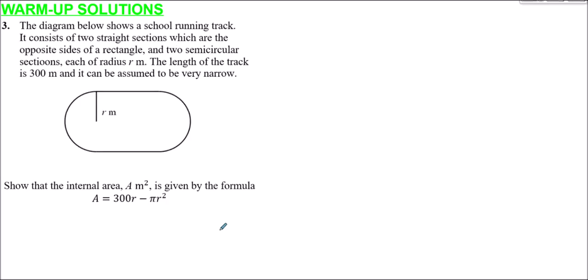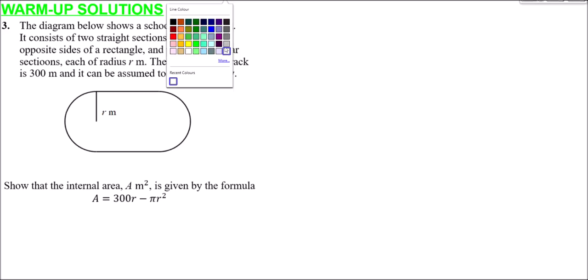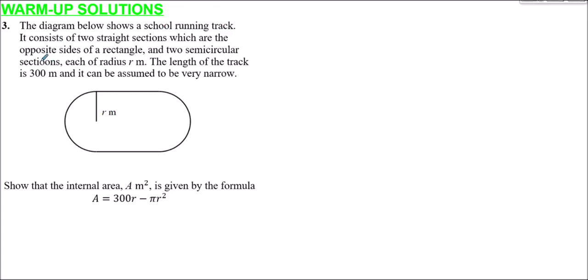Question 3 involves a running track with two straight sections forming opposite sides of a rectangle and two semicircular sections, each with radius r metres. The length of the track is 300 metres, assumed to be very narrow with no thickness. We need to show that the internal area A square metres is given by a specific formula.